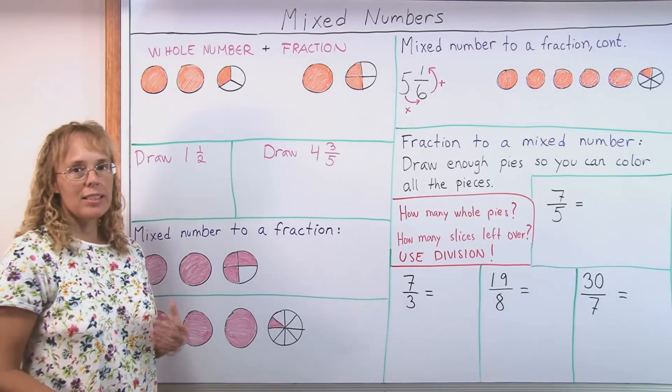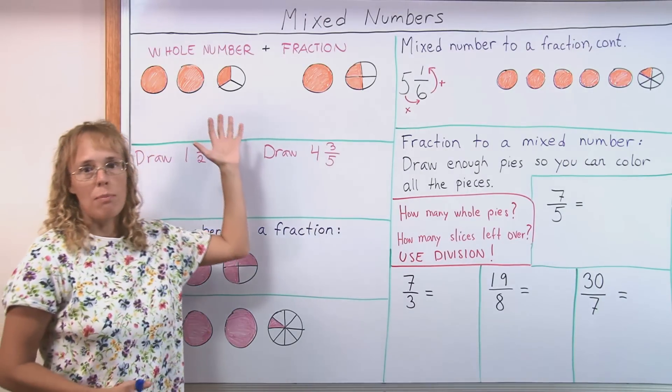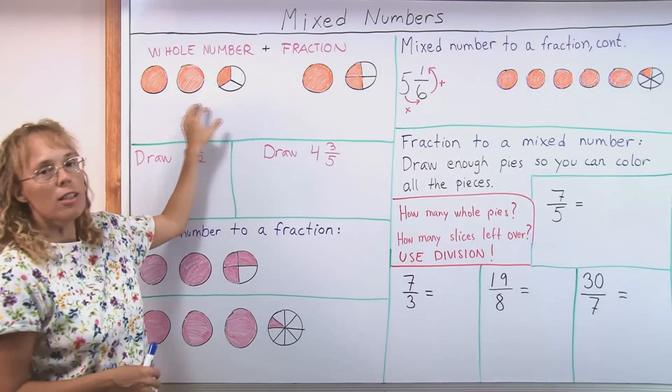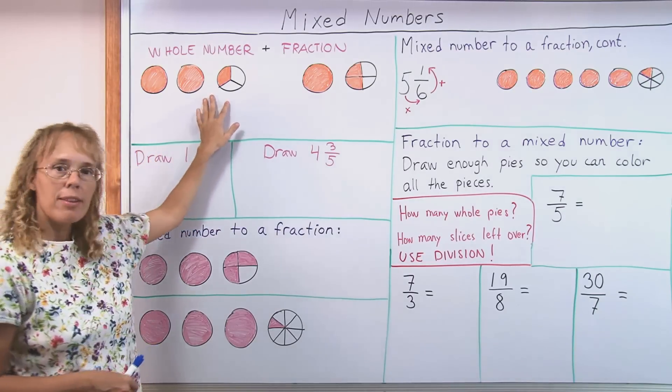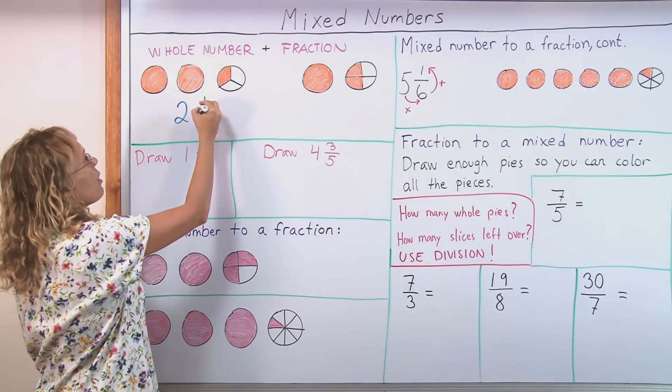Now mixed number concept in itself is very easy. All it means is that we have a whole number and a fraction together. For example, this picture here pictures a mixed number. We have two whole pies and one third of a pie and so we write it as two and one third.